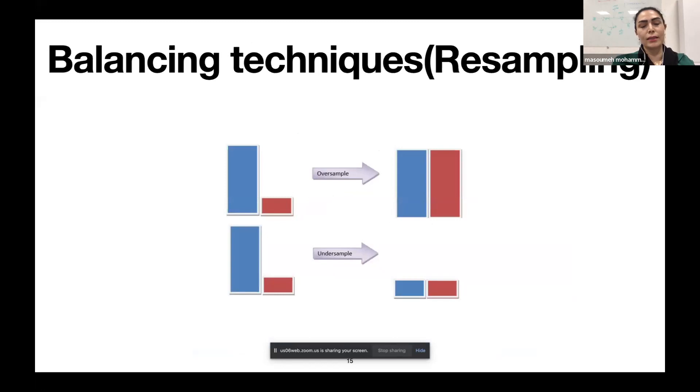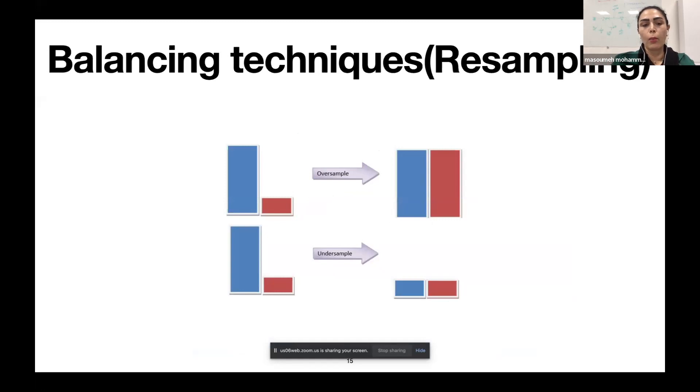To find the data set balancing best practice methods, some techniques are applied such as oversampling and undersampling. We observe better prediction in all models using the undersampling technique. Moreover, to generate additional synthetic data, some data augmentation techniques are applied. This slide represents some data augmentation techniques in NLP, which random insertion and random swap, shown in different colors, gain the best results for us. So we decided to pick random insertion and random swap.